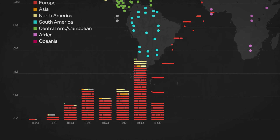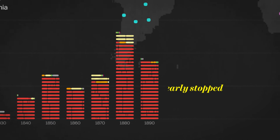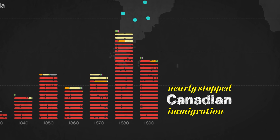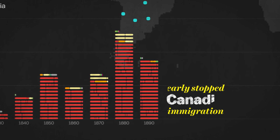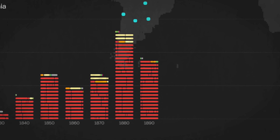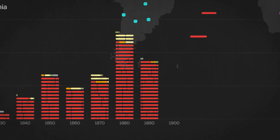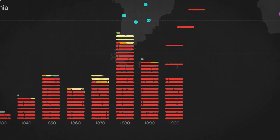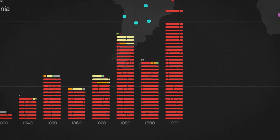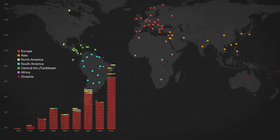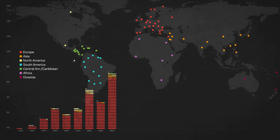The economic depression of the 1890s decreased European immigration and nearly stopped Canadian immigration entirely. But after the depression, the demographics of immigrants changed, and there was a rise in Russian, Italian, Spanish, and Japanese immigrants.